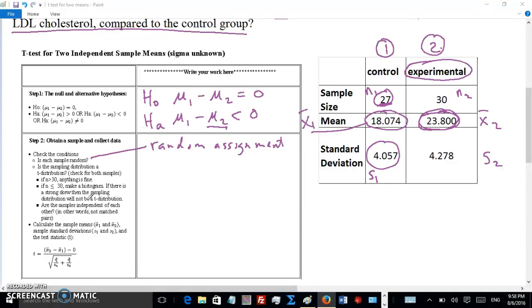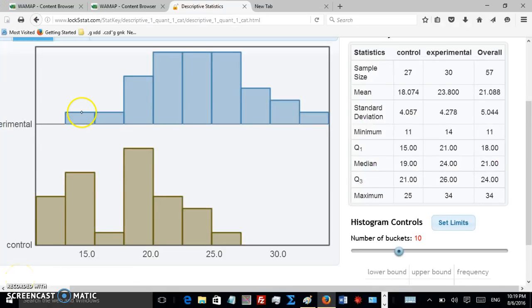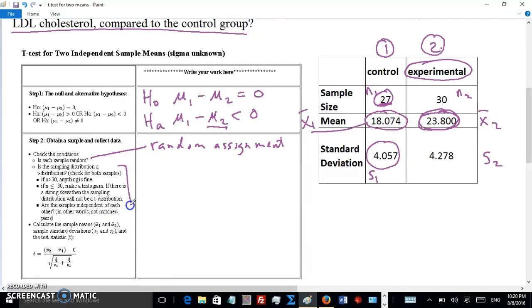Here's the histograms. You can see both histograms are unimodal and symmetric. Even if there's some skew, that's okay because it's close to 30 our sample sizes. So it meets the conditions. We'll say yes for this part. Now, are the samples independent of each other? Yes, we'll say yes to that as well, because it's two completely different groups. They're not brothers or sisters or something like that of each other. They're just two totally separate groups and they were randomly assigned, so yes they're independent of each other.